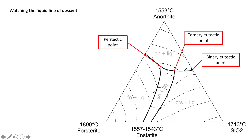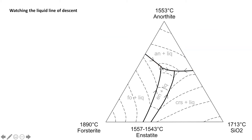Here's the binary eutectic between anorthite and silica, and then another between forsterite and anorthite. Here we have our ternary eutectic point between anorthite, enstatite, and silica. And then here we have our peritectic point between forsterite, enstatite, and anorthite.